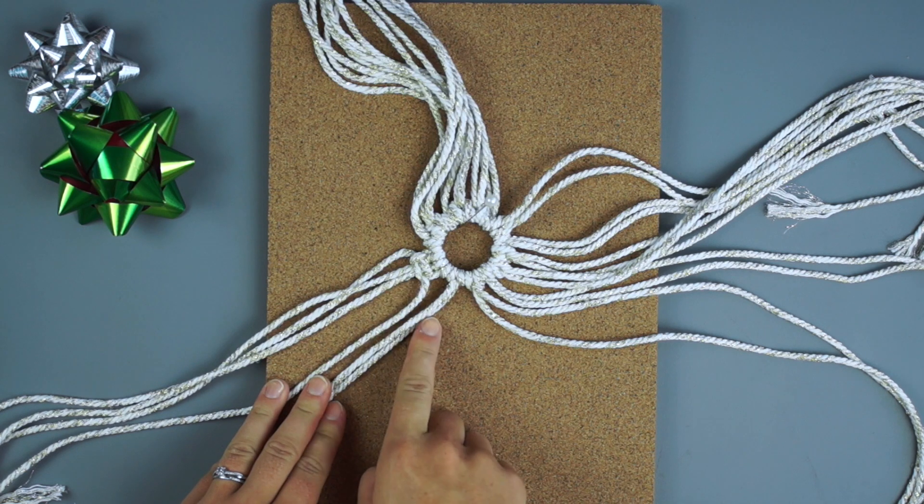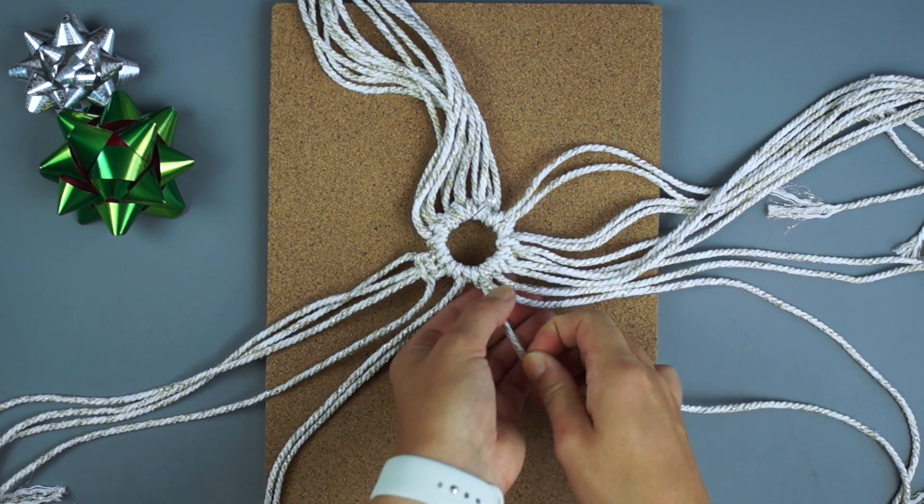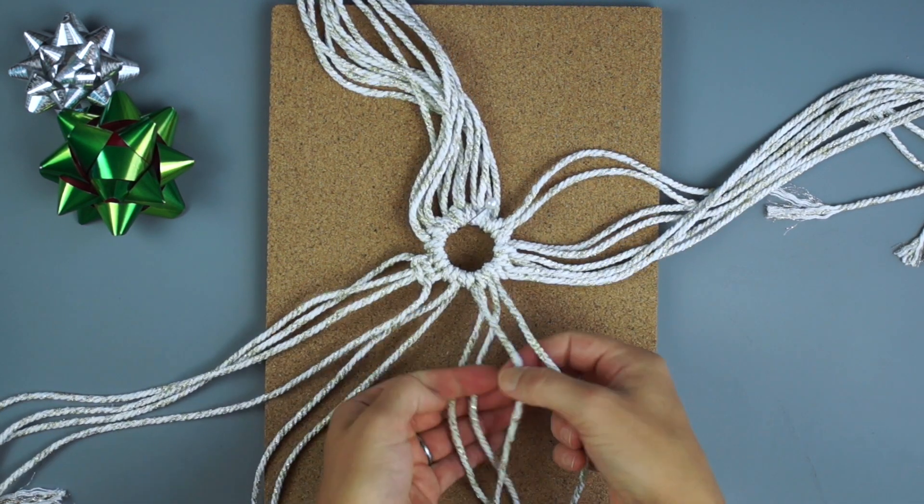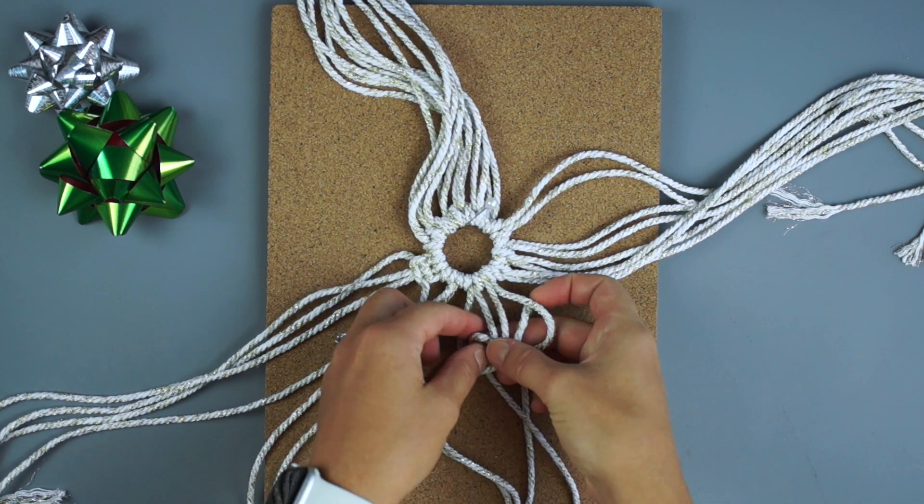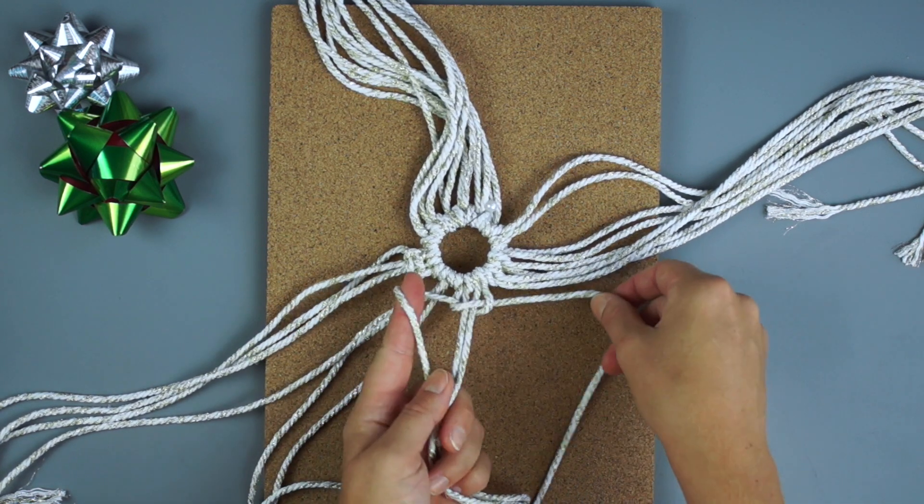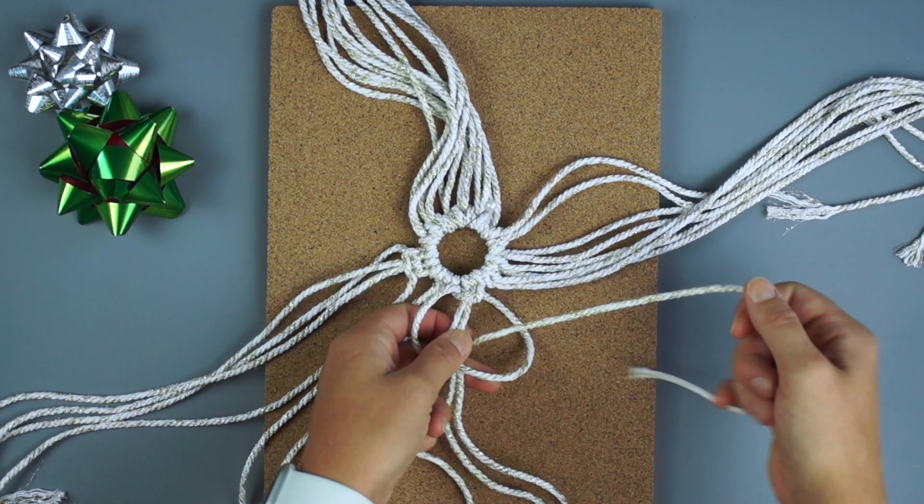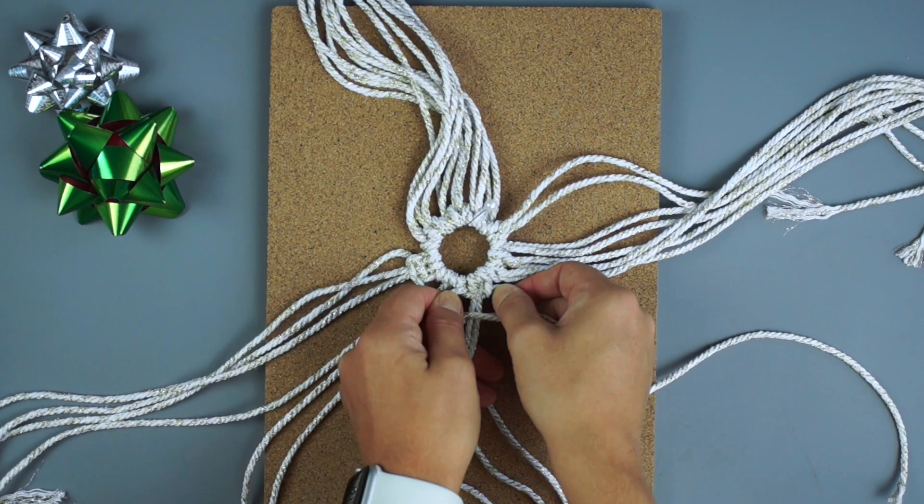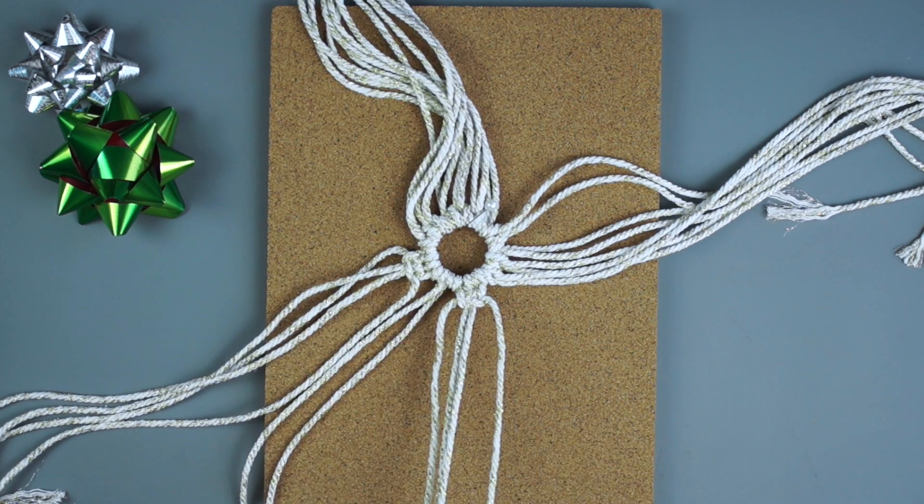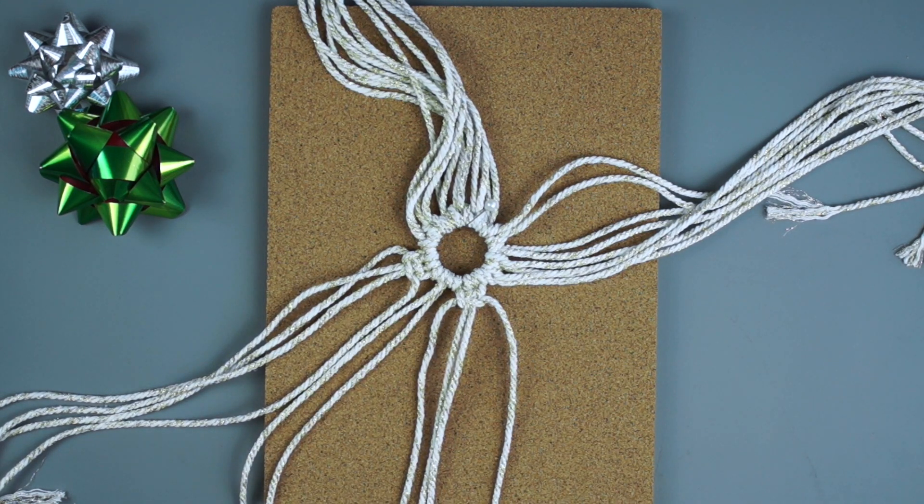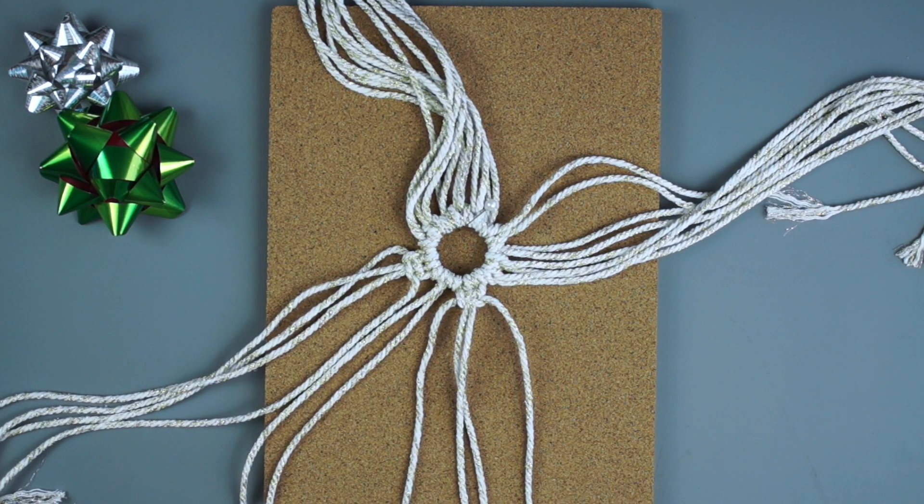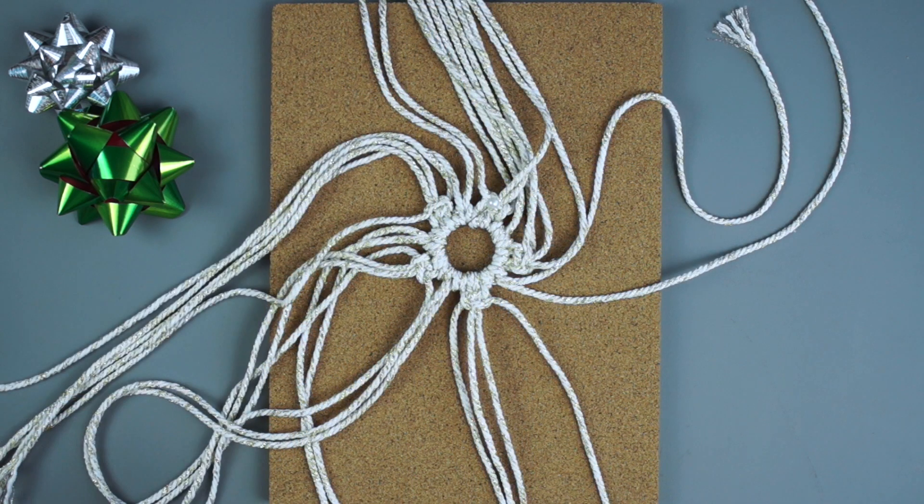Skip 2 strands of rope and tie another square knot. Continue this process all the way around your work. When finished you should have tied 5 square knots.